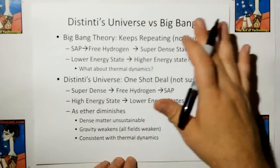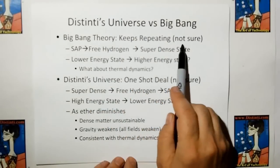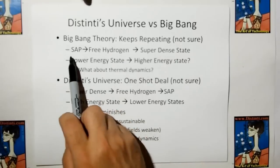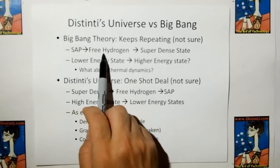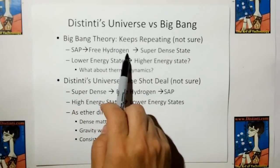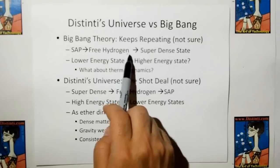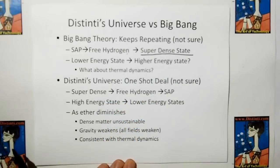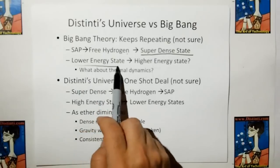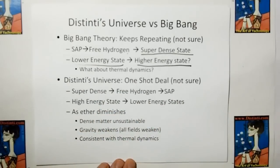Distinti's universe versus the Big Bang: the Big Bang theory posits that after the Big Bang, subatomic particles condense into free hydrogen, which then collect together and under gravity combine to a super-dense state. So the universe goes from a lower energy state to a higher energy state, which doesn't seem to jive with thermodynamics.